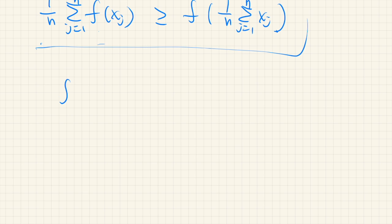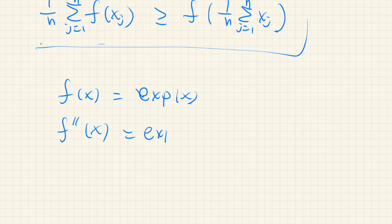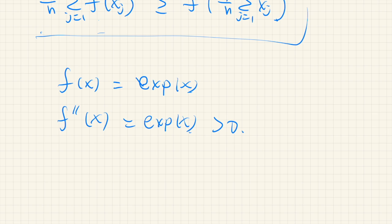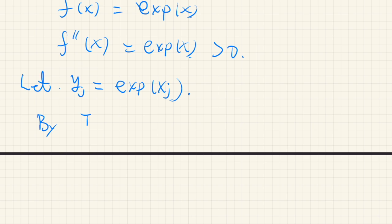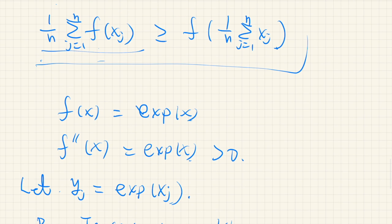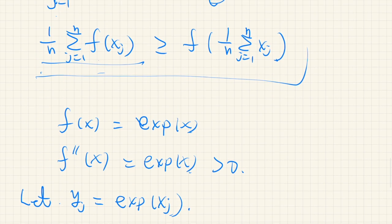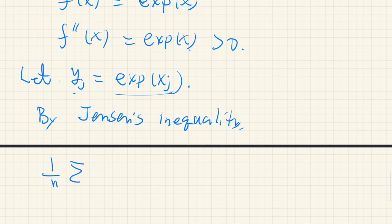Now suppose f(x) = eˣ. We know its derivative doesn't change, so the second derivative is also eˣ, which is always positive. Therefore we can apply Jensen's inequality to this function. For each xj, define yj = eˣʲ. Applying Jensen's inequality, the left-hand side is (1/n)·Σyj.